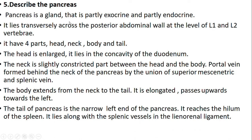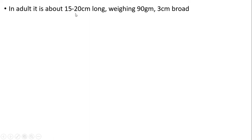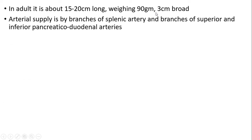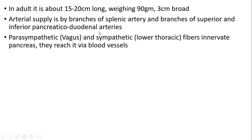Fifth question: structure of pancreas. Pancreas is a gland that is partially endocrine and partially exocrine. It lies transversely across the posterior abdominal wall. It has four parts: head, neck, body and tail. The head is enlarged and lies in the concavity of the duodenum. The neck is a slightly constricted part between the head and body; the portal vein is formed behind the neck by the union of superior mesenteric and splenic veins. The body extends from the neck to the tail, elongated and passing upwards towards the left. The tail is the narrow left end of the pancreas reaching the hilum of the spleen, lying along the splenic vessels. The adult pancreas is nearly 20 cm long, weighing nearly 90 grams and 3 cm broad. Arterial supply is by branches of splenic artery and branches of superior and inferior pancreaticoduodenal arteries. Parasympathetic and sympathetic fibers innervate the pancreas via blood vessels.